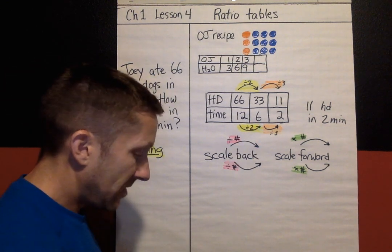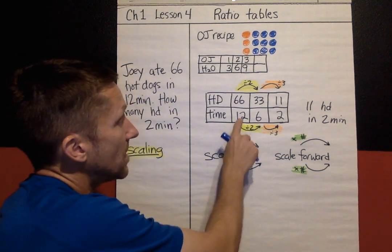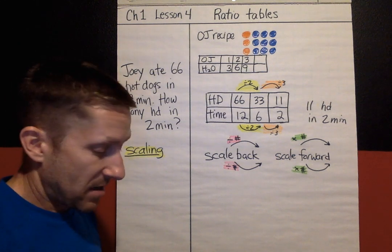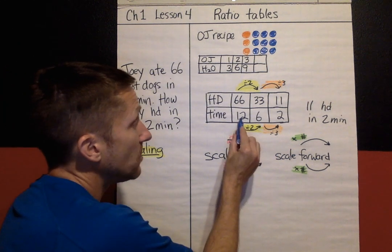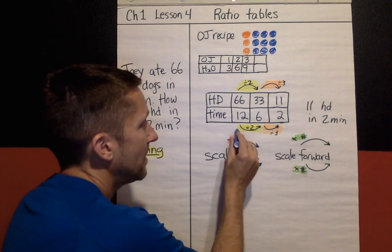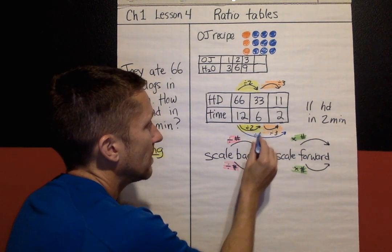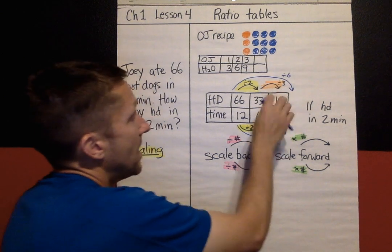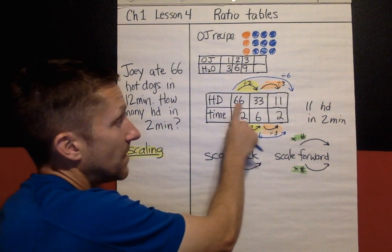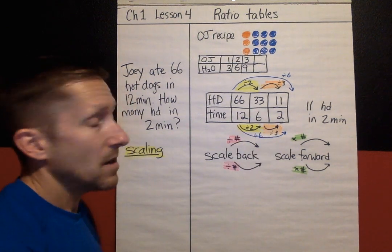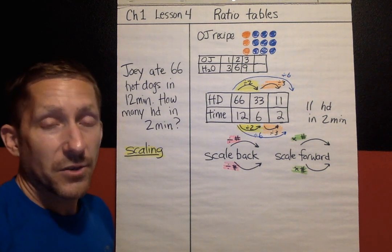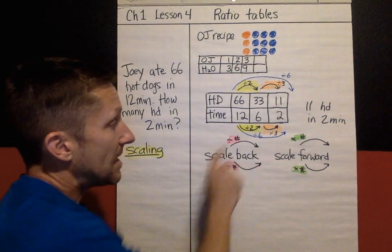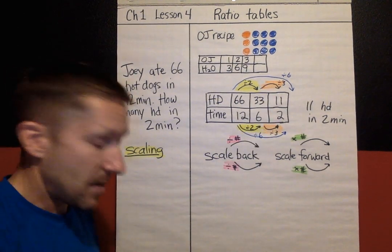I just thought of something to add. You might have noticed you could go from the original ratio to the answer in one move. You could divide 12 by 6 to get 2, so I could have shown divide by 6 — then 66 divided by 6 is 11, and 12 divided by 6 is 2. There's more than one way to show your work. I'm going to be checking the work shown tomorrow.